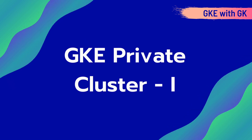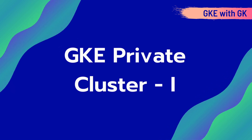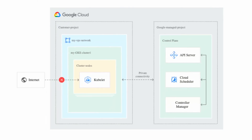It's a huge security risk, especially when your workloads are in production. In a private cluster you can control access from a specific IP address, and your worker nodes will not have access to the internet — they will only have private IP addresses.